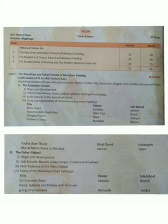In the first unit, we have the Rajasthani School — its origin and development. Its sub-schools are Mewar, Bundi, Jodhpur, Bikaner, Kishangarh, and Jaipur. We will also cover the main features of the Rajasthani School and study and appreciation of selected Rajasthani paintings.